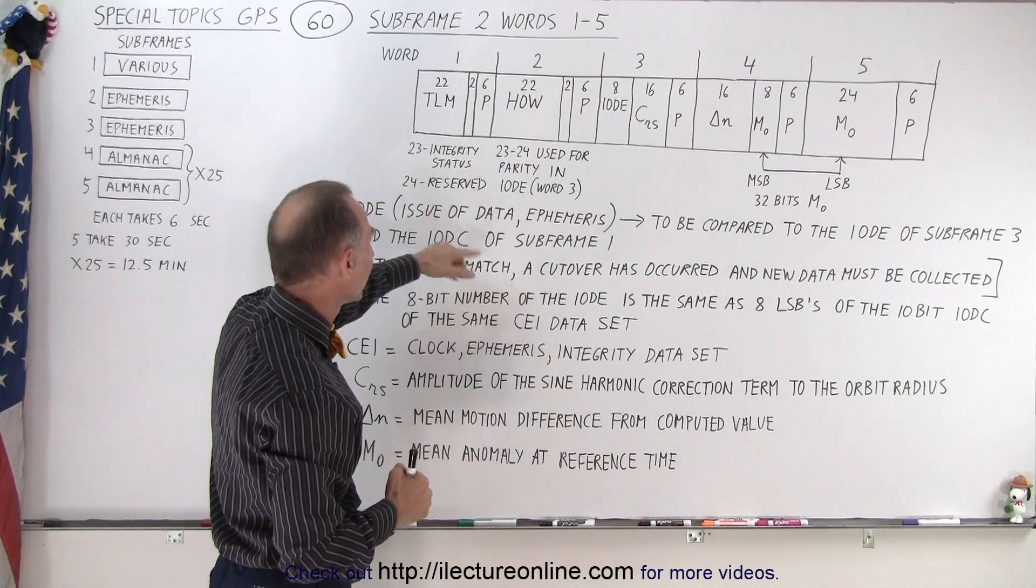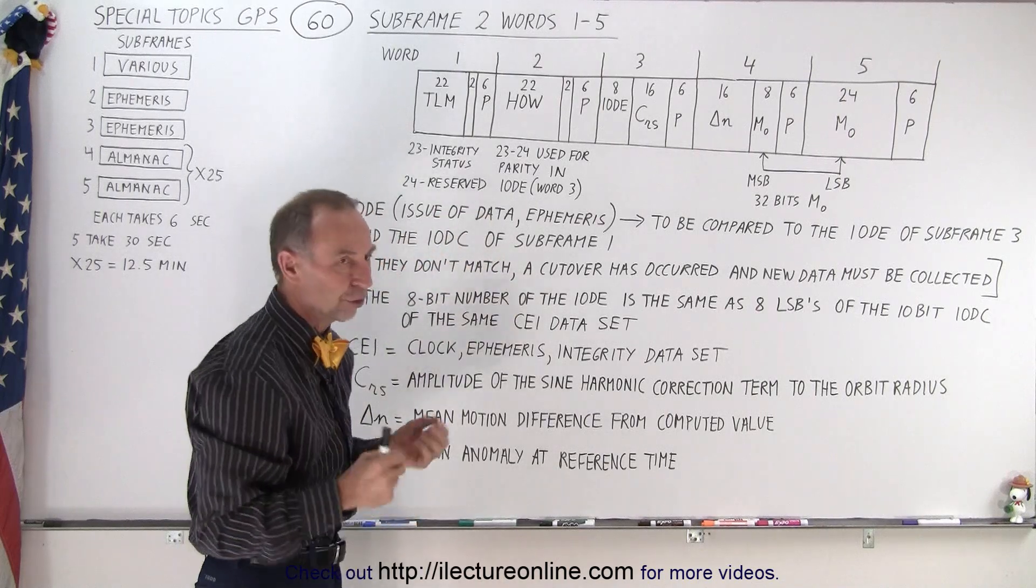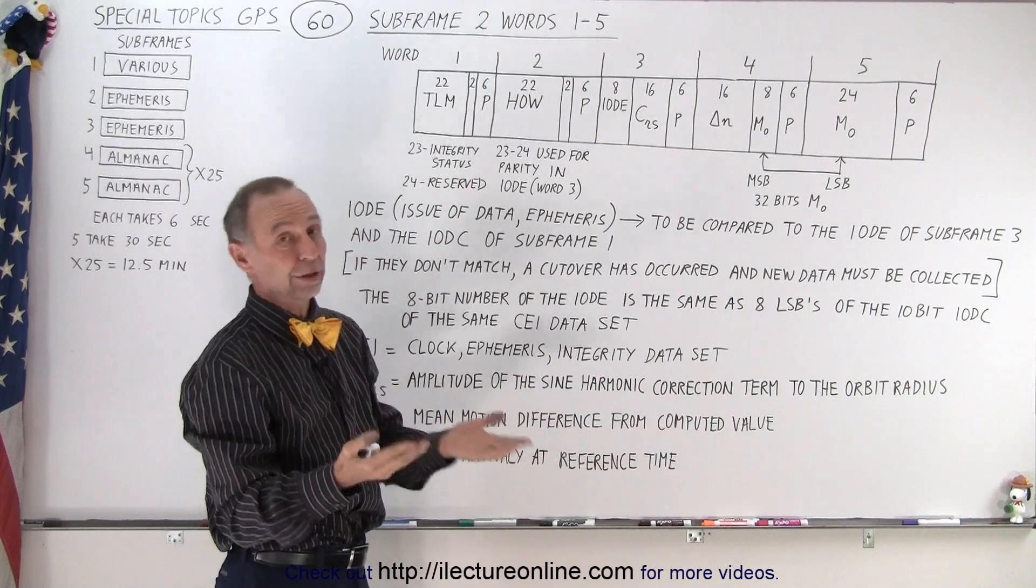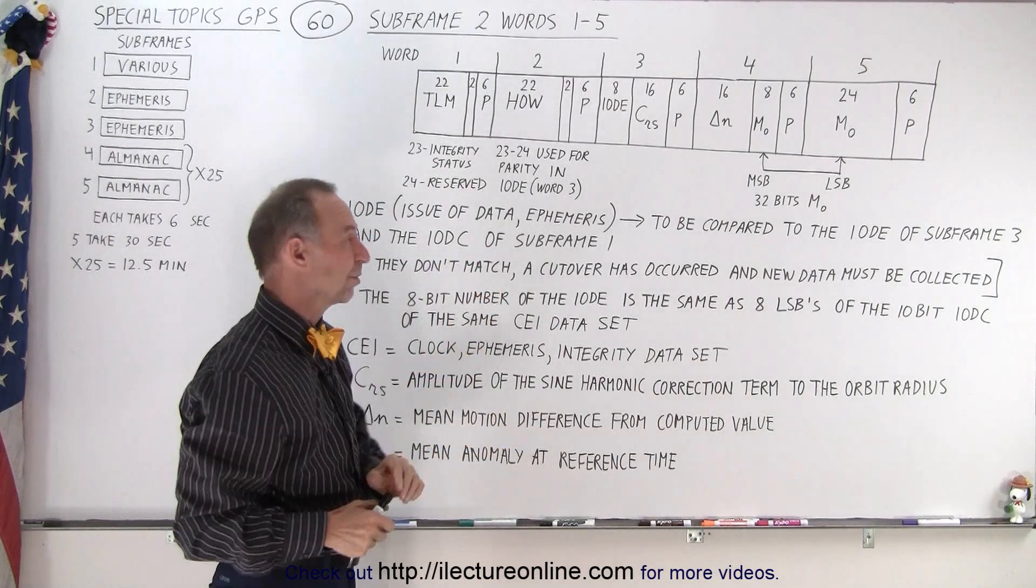And so that's why we check for the Issue of Data Ephemeris. It just tells us which data set, ephemeris data set, we're dealing with. Typically in a 24 hour day we have 6 of those 4 hour sets.